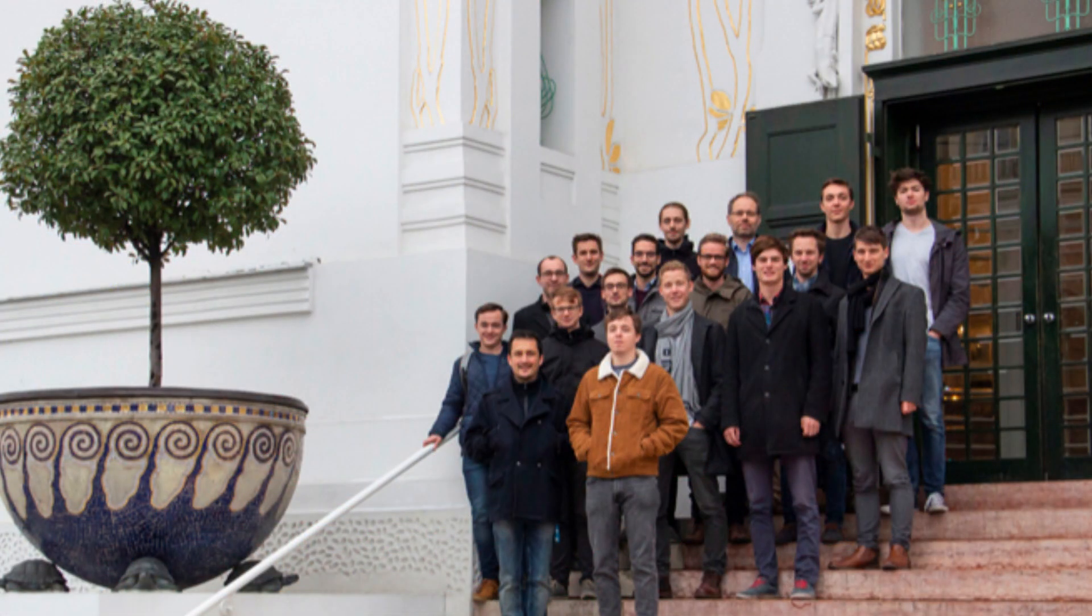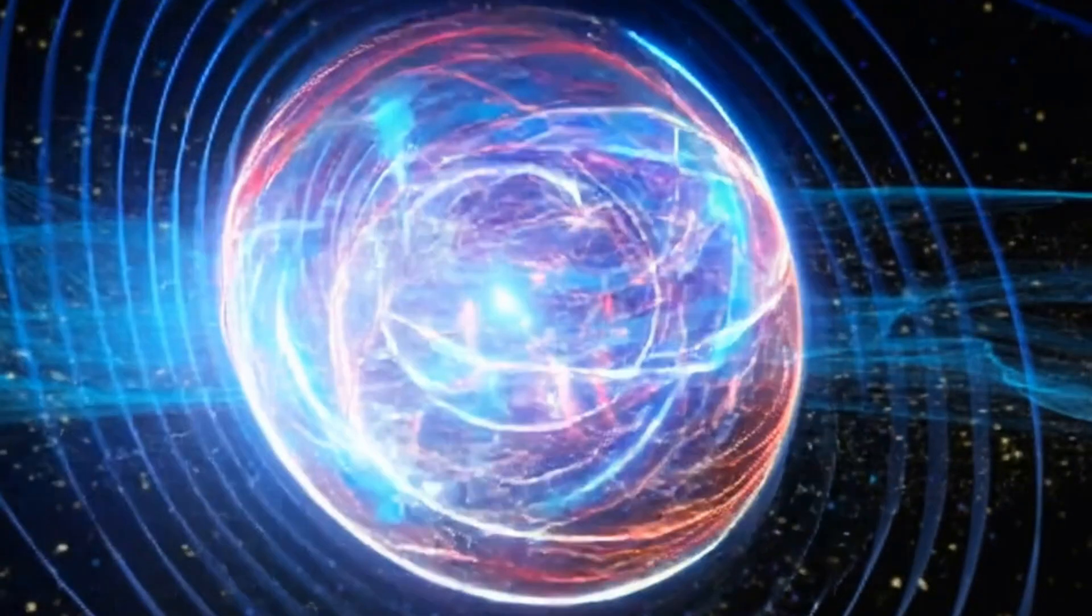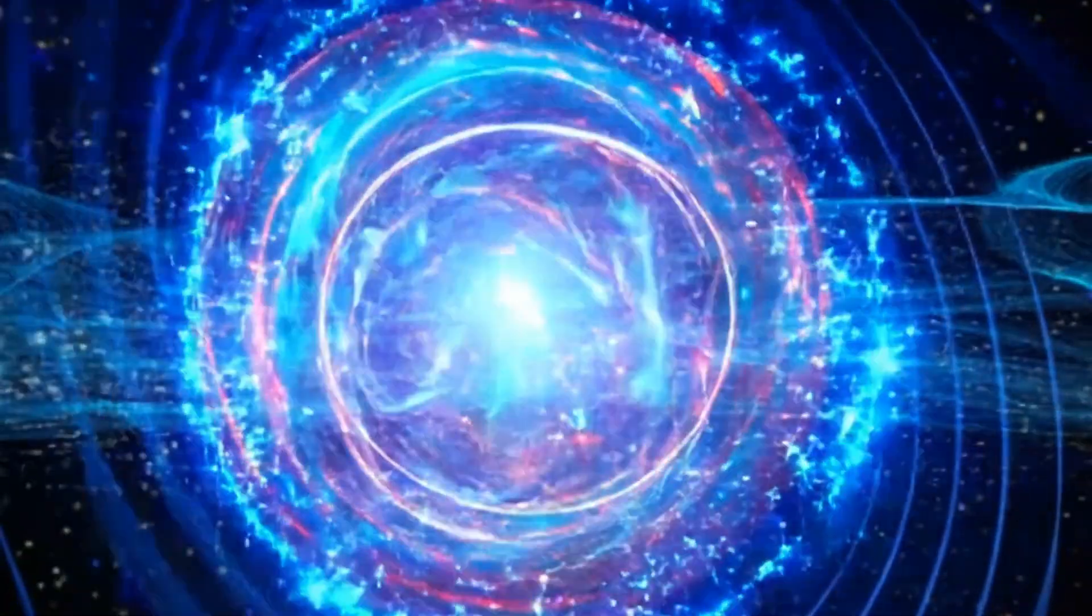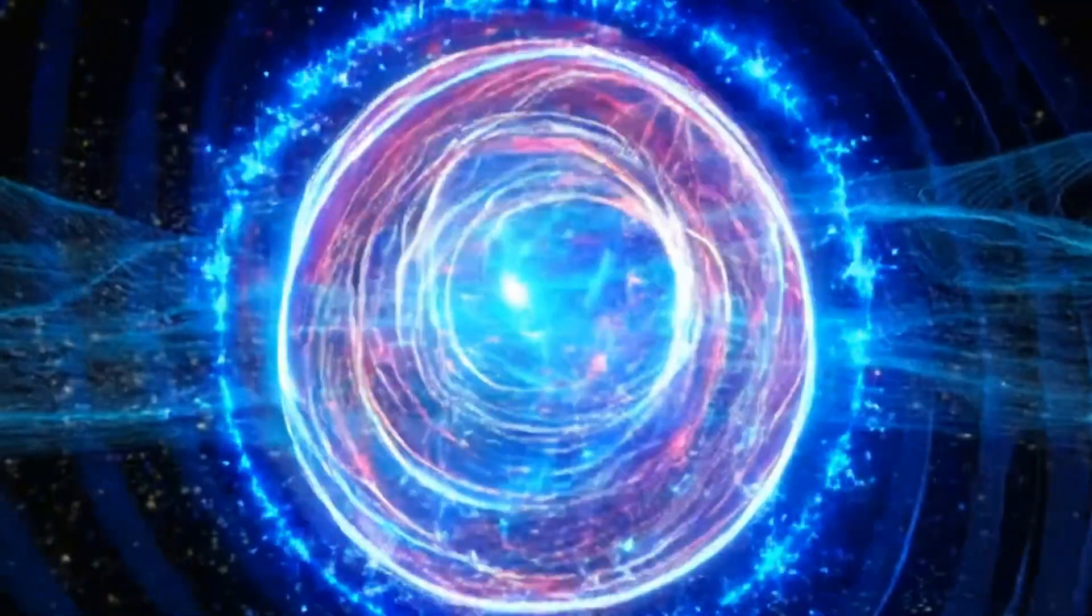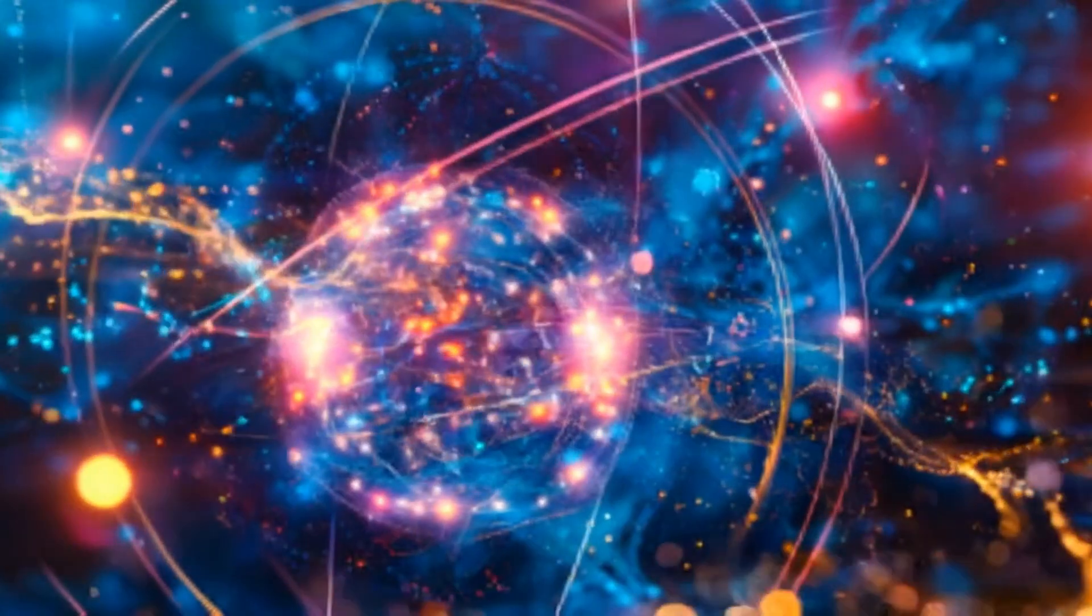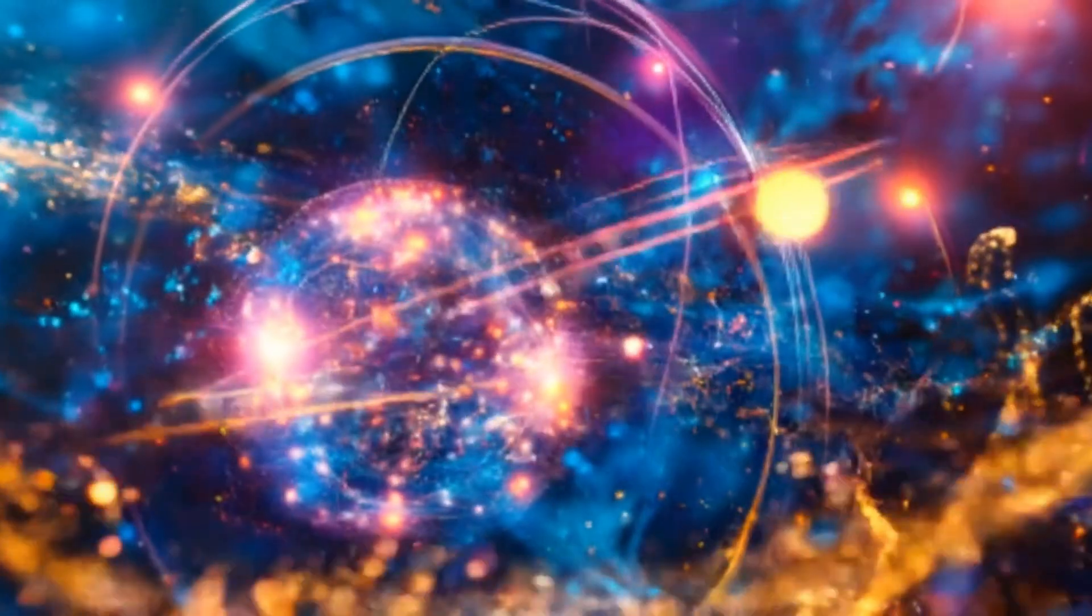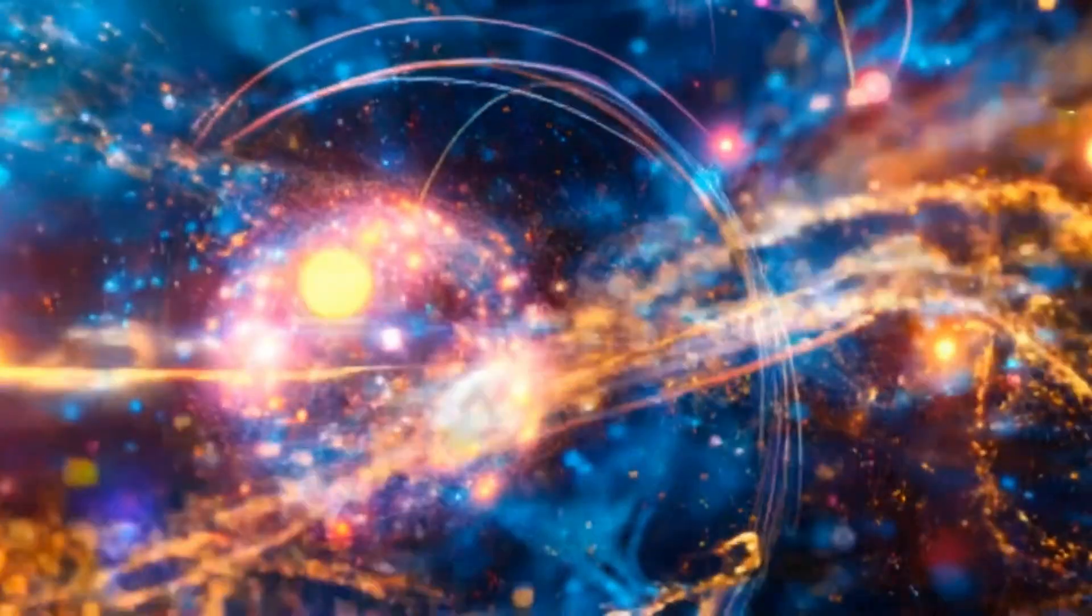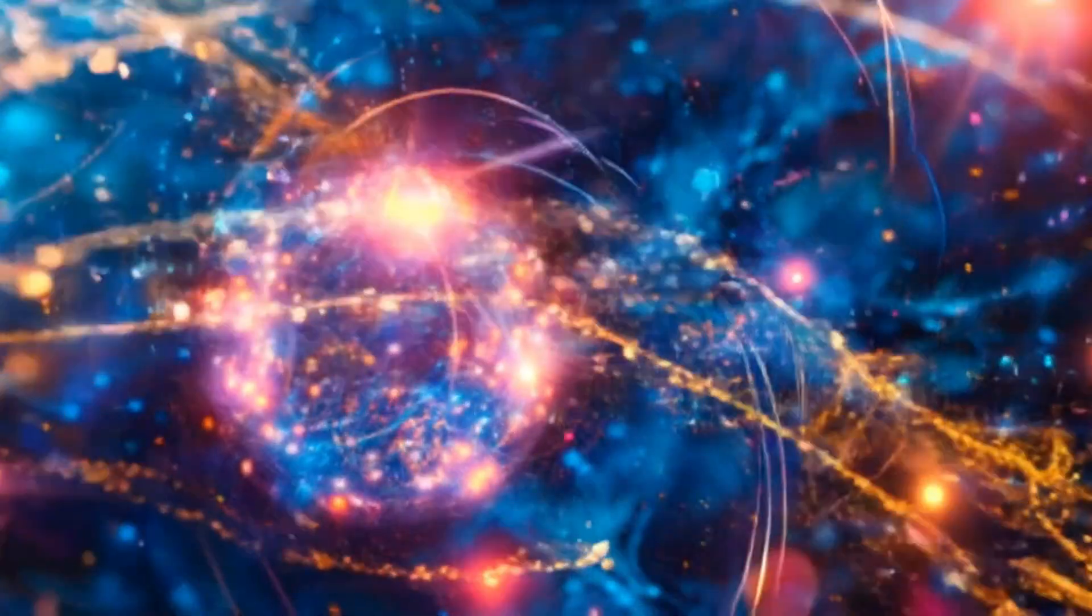But somewhere far from the hum of the ordinary world, in a quiet lab in Vienna, there's another rhythm beating. It's invisible, silent, and yet more fundamental than the gears of any clock. Inside a lattice made of pure light, tiny particles, smaller than atoms, governed by the strange rules of quantum mechanics, are moving to a rhythm that no human built. No battery powers it. No pendulum swings. And yet, it never stops.